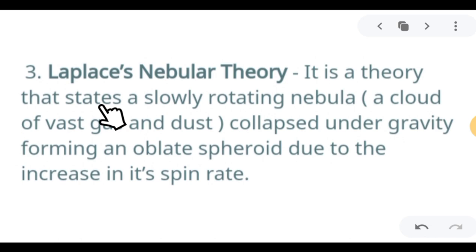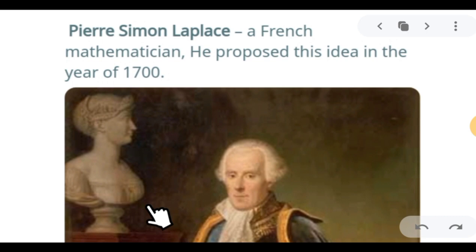Next theory we have the Laplace Nebular Theory. It is a theory that states a slowly rotating nebula - again, nebula is a cloud of vast gas and dust - collapses under gravity, forming an oblate spheroid due to the increase in its spin rate. The difference of Laplace Nebular Theory is that the formation of the orbit is due to the spin rate and not due to the collapse. This theory was proposed by Pierre Simon Laplace, a French mathematician who proposed the idea in the year 1700.